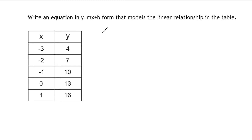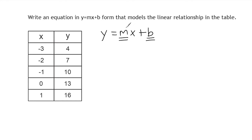So the first thing that we want to do is rewrite our equation y equals mx plus b. Now, when you're trying to write an equation in this form, really all you're looking for is the value of m and the value of b. The y is going to stay a y and the x is going to remain an x. Sometimes we might have to plug in a value for x and y in order to determine what the value of b is.